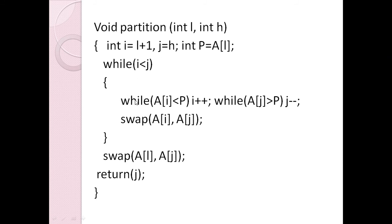While i is less than j, we move i with i plus plus as long as a[i] is less than p — we stop when we find a greater element. We move j with j minus minus as long as a[j] is greater than p — we stop when a[j] is less than p. Then we swap a[i] and a[j].